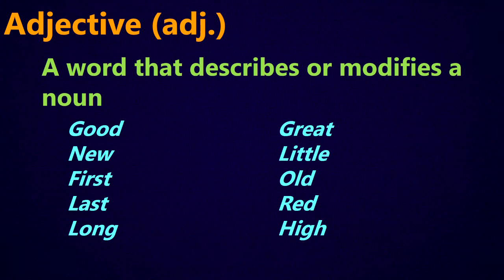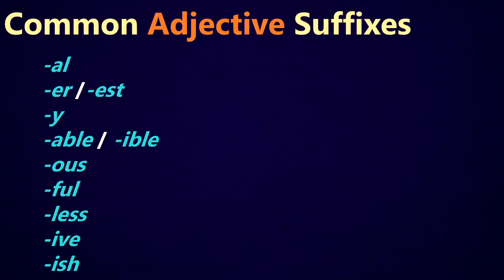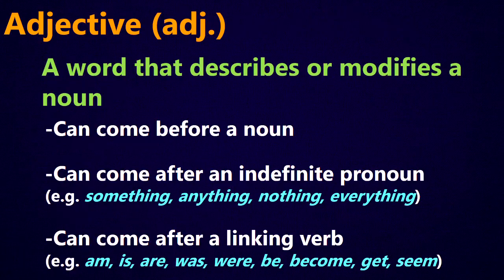Adjectives are words that describe or modify a noun — that's their only job in a sentence. Examples include great, good, new, first, old, and colors like red, blue, yellow, gold. Common adjective suffixes include -ful or -less, the -ous ending, the -er or -est ending, and the -ish ending like bluish or greenish. In a sentence, adjectives come in three main places: before the noun they describe, after an indefinite pronoun like something or nothing, or after a linking verb like am, is, are, become, get, or seem.